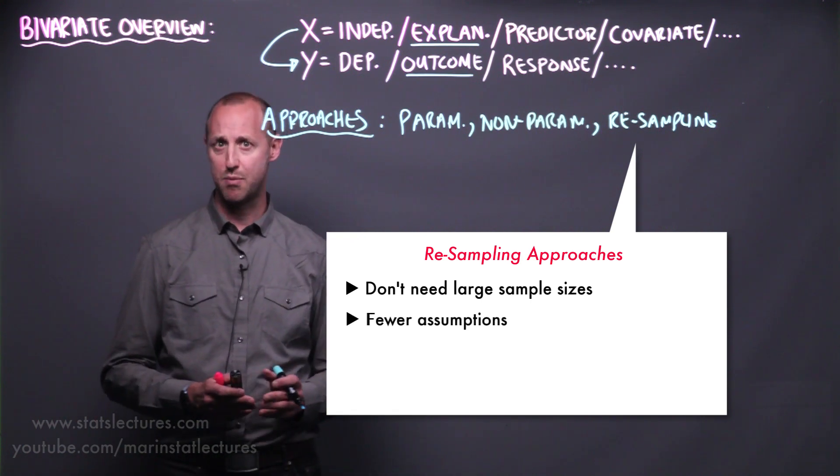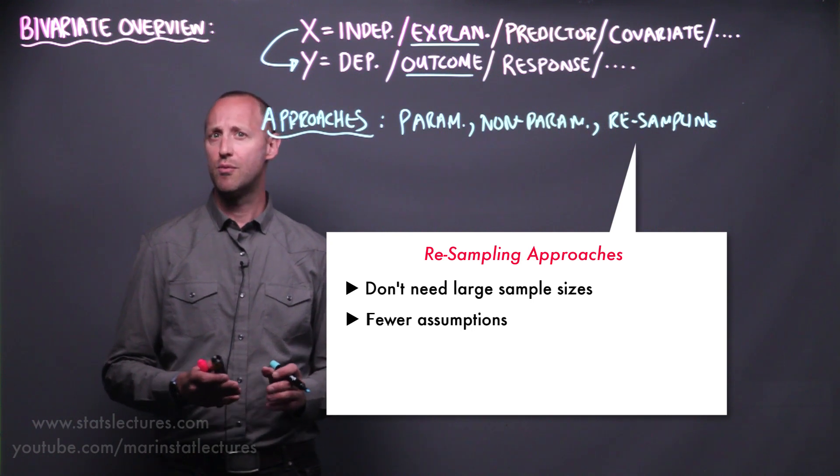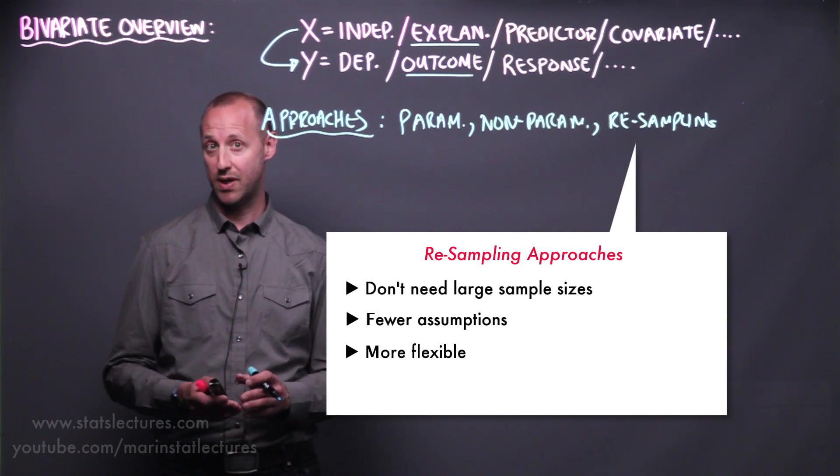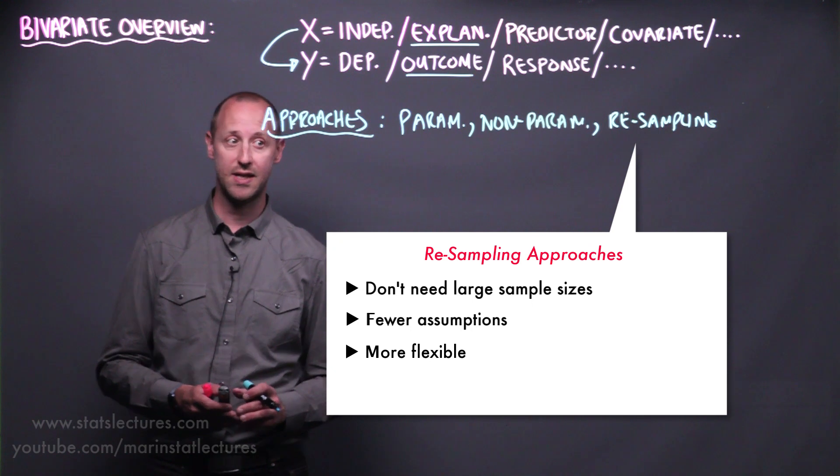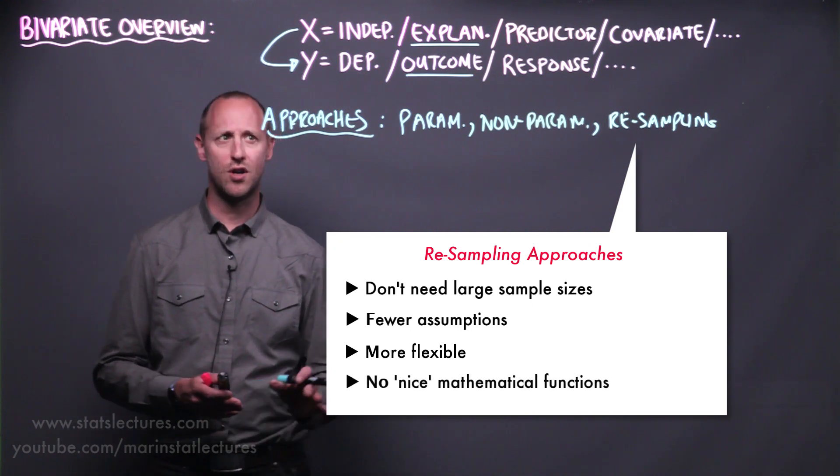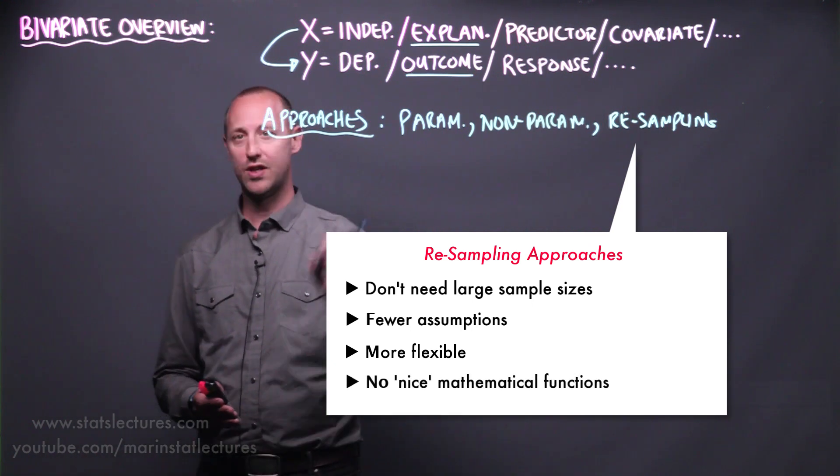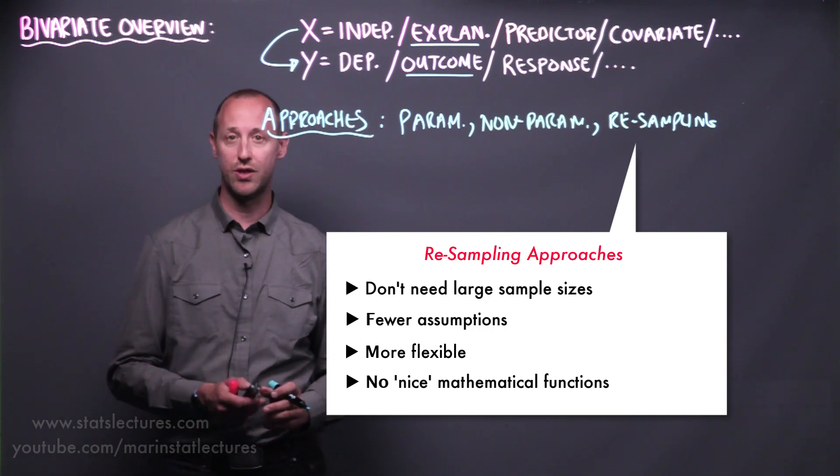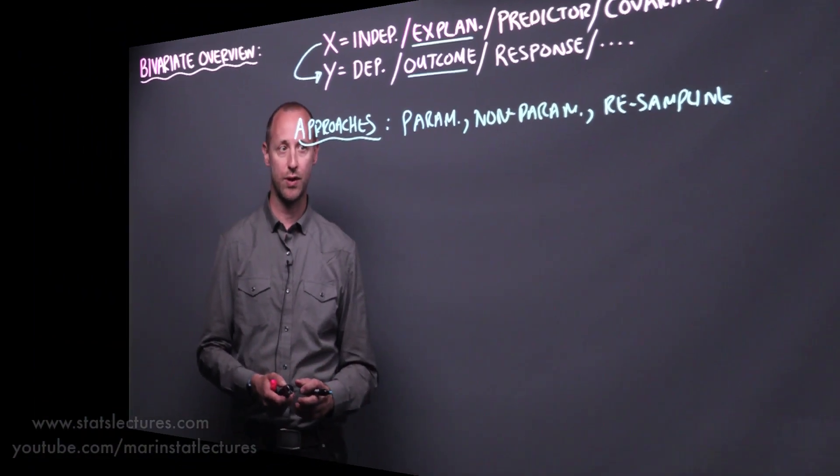They make fewer assumptions than parametric approaches. They're much more flexible in the estimates we can calculate or the hypotheses we can test, but they don't result in nice smooth mathematical functions like parametric approaches generally do. So all the details on these will be coming up shortly.